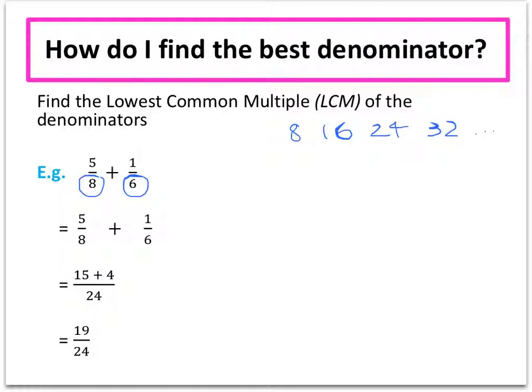If we're listing the multiples of 6, we have 6, 12, 18, 24 and so on. We can see now that our lowest common multiple of 8 and 16 will be 24.